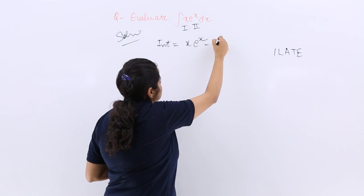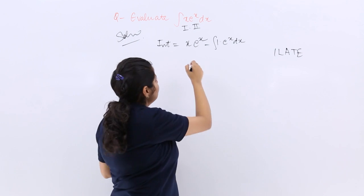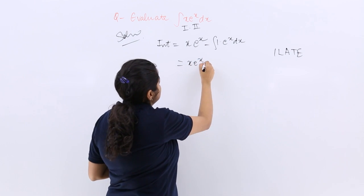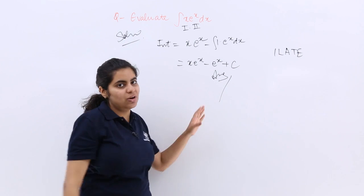So that is x times e raised to the power x minus e raised to the power x plus c, and that simply is your answer.